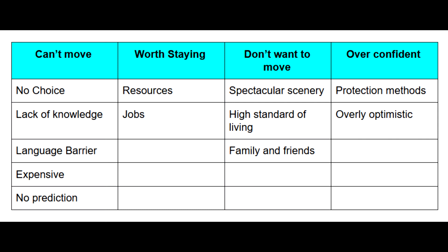The first reason is that they don't really have a choice — they either can't actually move, or they can't accurately predict the hazard. They might not be able to move because it's expensive and they don't have the money. It might be a lack of knowledge about where else they could go, or that where they live is a problem. Also, something as simple as the language barrier can affect people moving to a different area — they might not be confident they can integrate somewhere new.